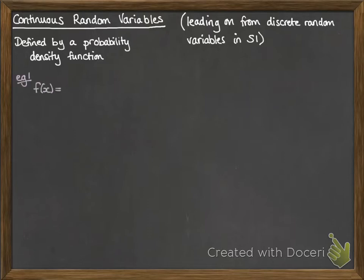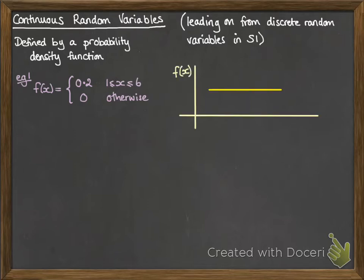Easiest to show you with an example. So here we have this probability density function showing you what happens with x. f of x is 0.2 if x is between 1 and 6 and 0 at any other time. So this is the graph of that probability. Between 1 and 6 we've got a value of 0.2 anywhere along that range. Anywhere outside of the range is 0. So our graph looks like this.